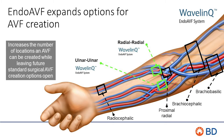The Wavelink Endo-AVF system is designed for the creation of an AV fistula in the deep ulnar or radial vessel systems of the upper forearm. Neither of these locations are used for surgical creation. Offering these sites increases the number of anatomical locations an AV fistula can be created while leaving future surgical AV fistula creation options open.